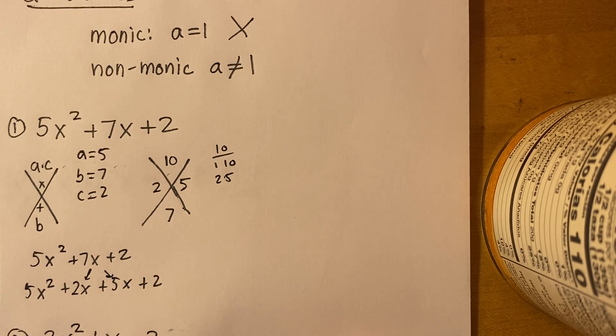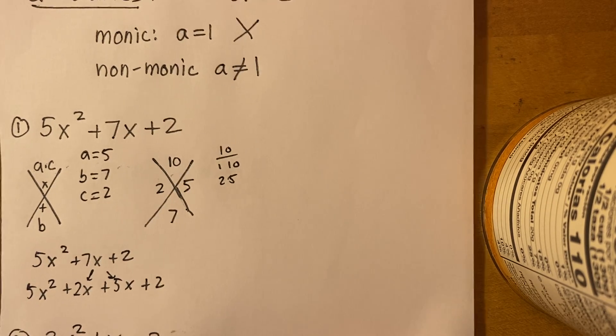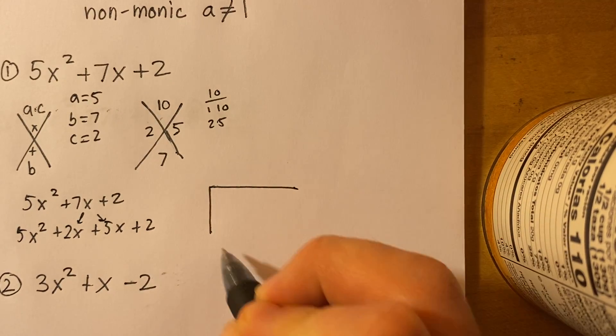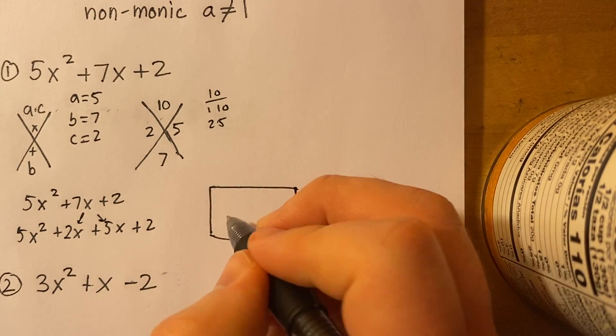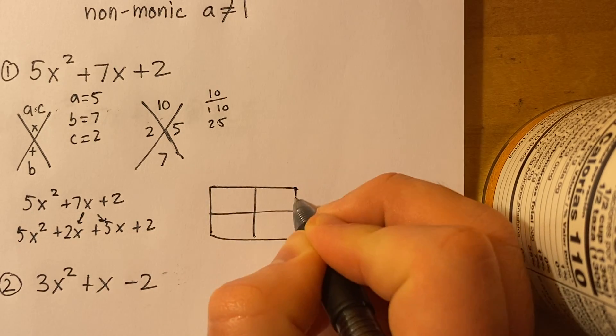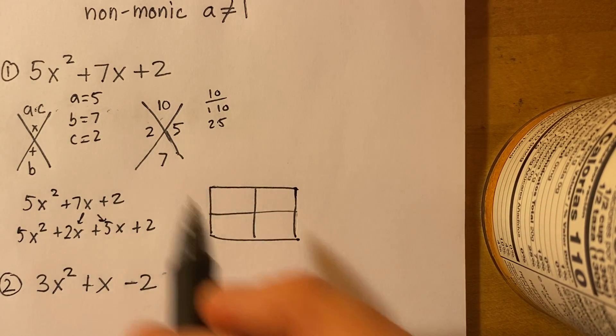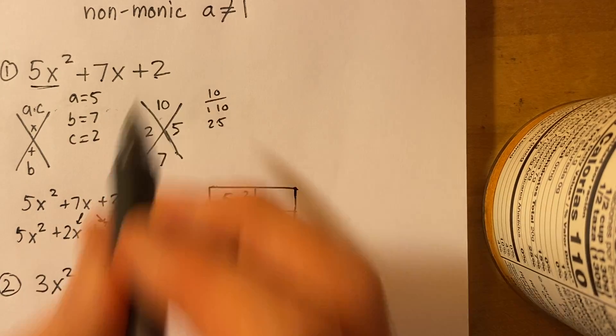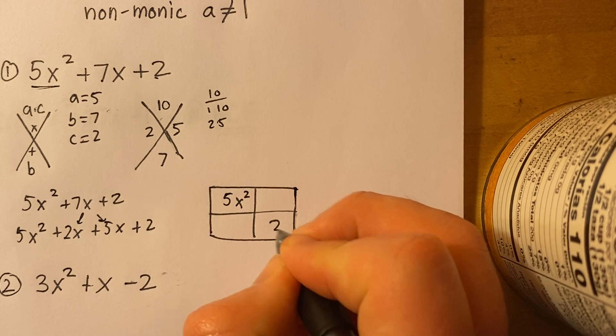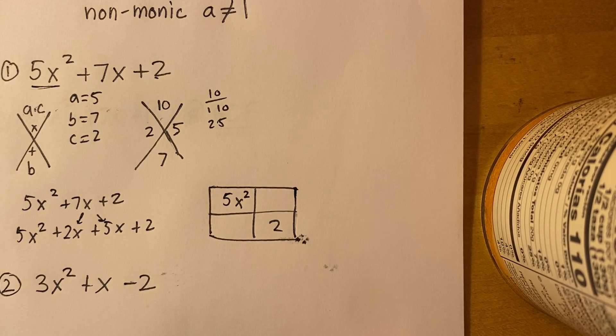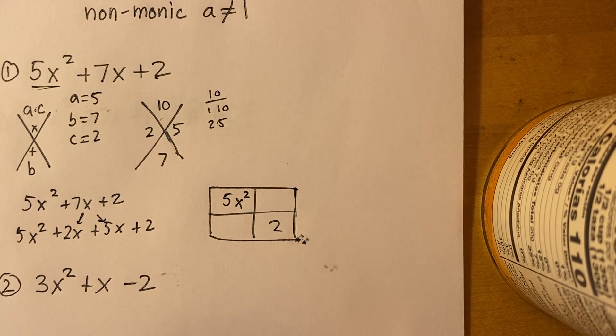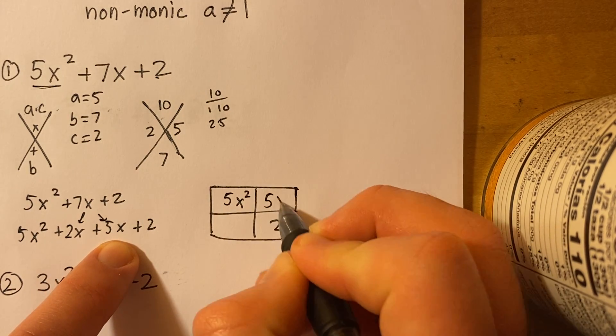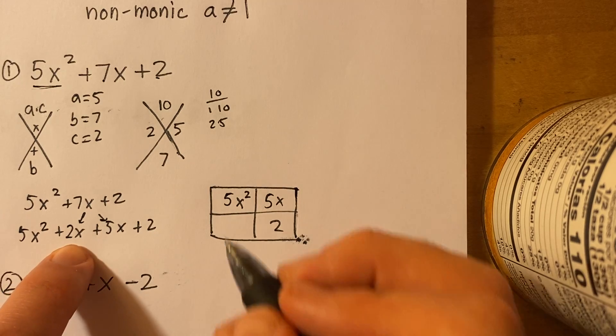So watch this. We have 5x² plus 7x plus 2, and we're going to rewrite that 7x with 5x² + 2x + 5x + 2. See how that works? I divided the 7x into 2x and 5x. Together, they'll have 7x. So what we do now is we're going to make a little box. So in my box, I'm going to make a 2 by 2 box just like so. I'm going to put the first term here, 5x², and I'm going to put the second term right there, 2.